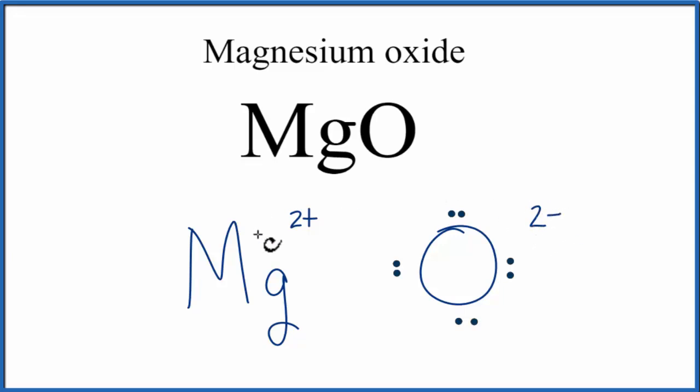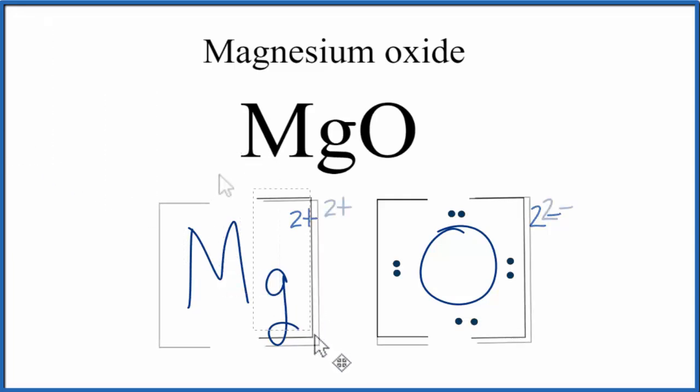And the negative and the positive, those are attracted together, and that's why we have this ionic bond here between Mg and O. We should put brackets around this oxygen to show that it's an ion. Often you'll also see brackets around the positive ion as well. And that makes this the Lewis structure for MgO magnesium oxide.